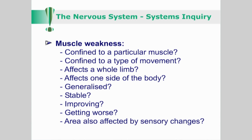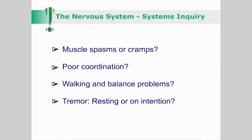In addition to headaches, other inquiries relating to the nervous system include the following. Does the patient suffer from muscle weakness? Is it confined to a particular muscle, to a type of movement, affecting a whole limb, one side of the body, or is it generalized? Is their weakness stable, improving or getting worse? Is the involved area affected by sensory changes? Do they suffer from frequent muscle spasms or cramps? Do they have poor coordination or trouble with walking and balance? Do they suffer from tremor? Is this evident at rest or on intention?